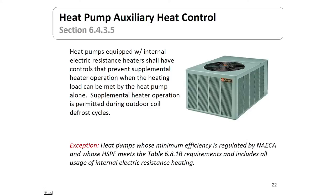On heat pump auxiliary heat control: heat pumps equipped with internal electric resistance strip heaters need controls that prevent supplemental heating with that strip heater when the load is actually met by the heat pump compressor itself. The exception is heat pumps where the minimum efficiency is regulated by the National Appliance Energy Conservation Act and whose heating seasonal performance factors meet table 6.8.1B.